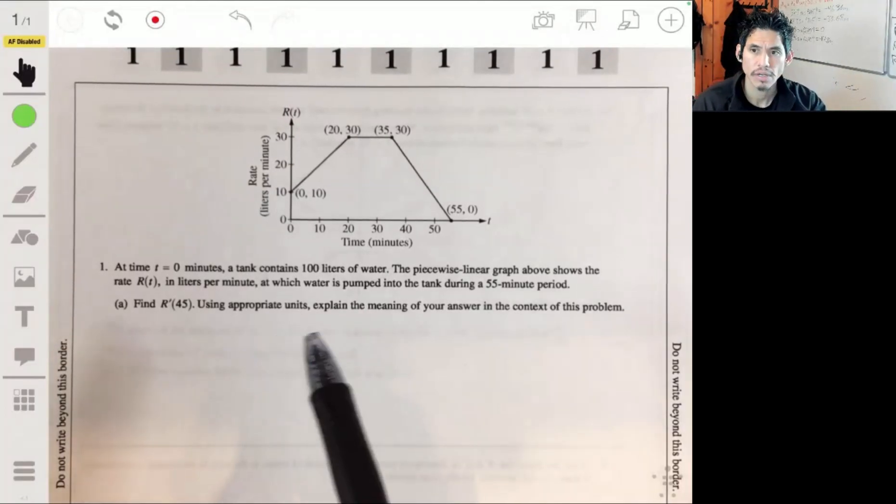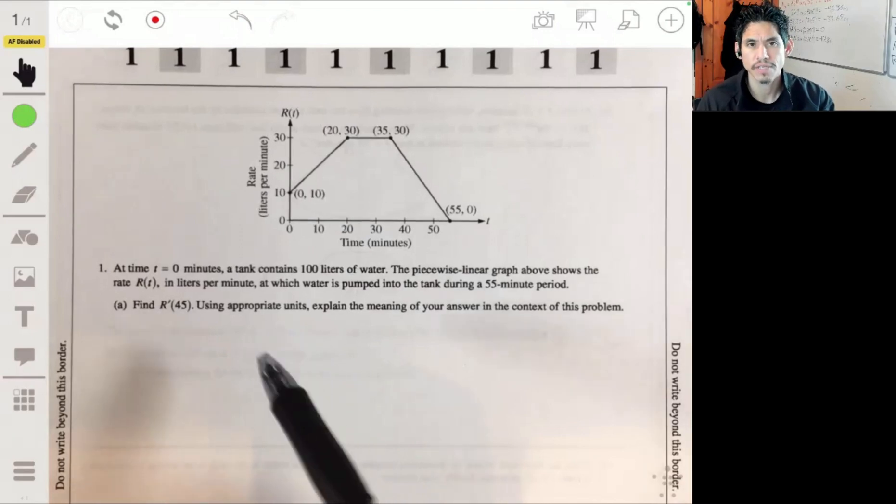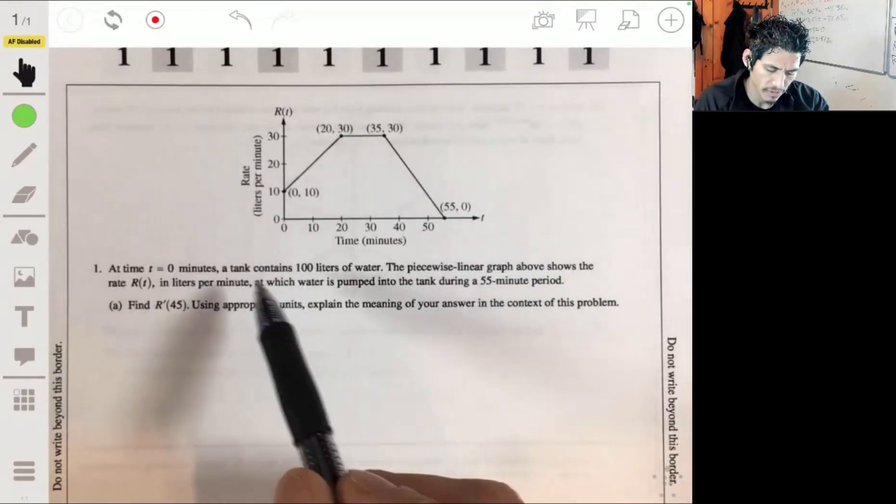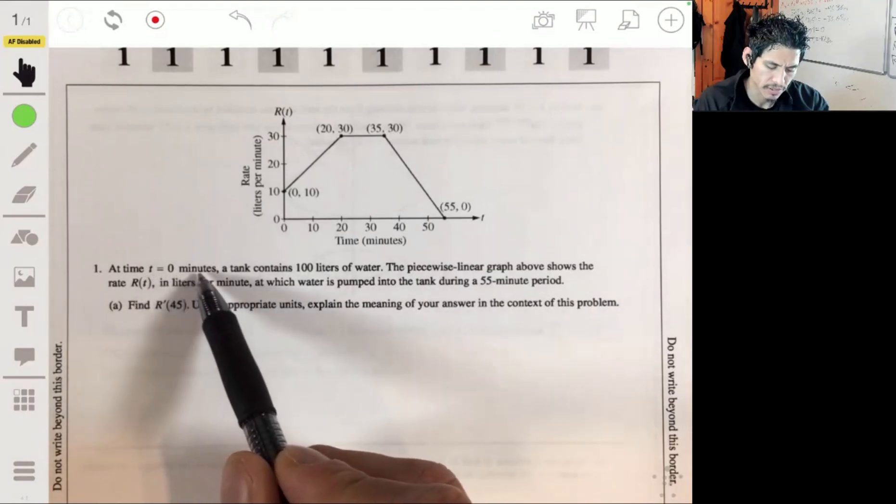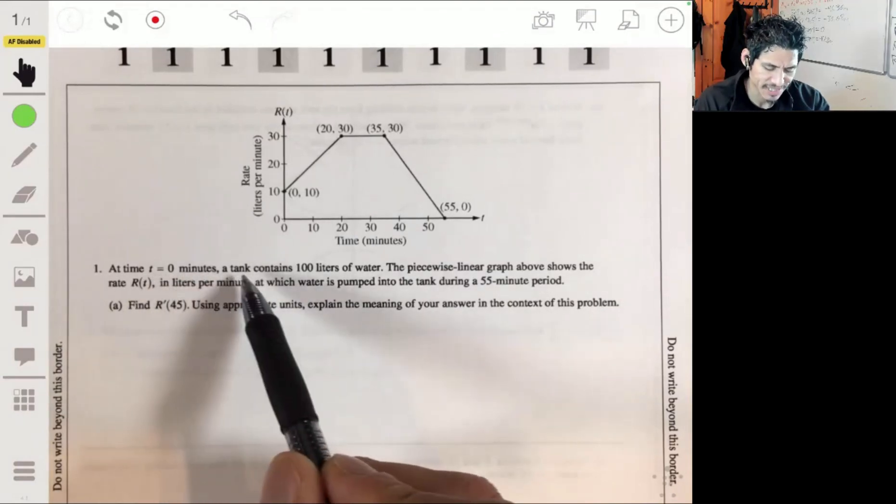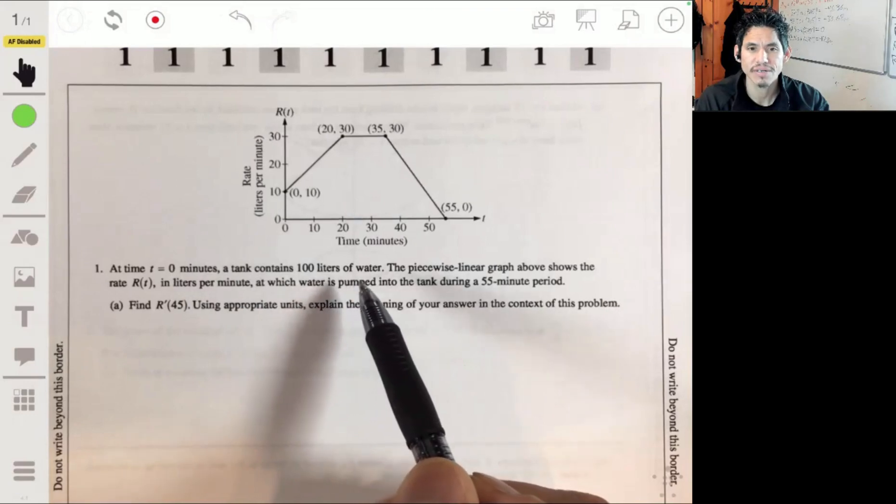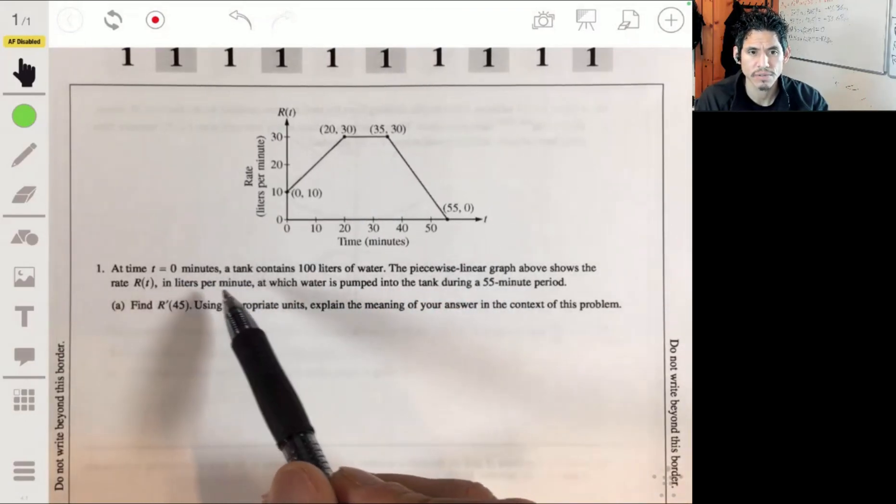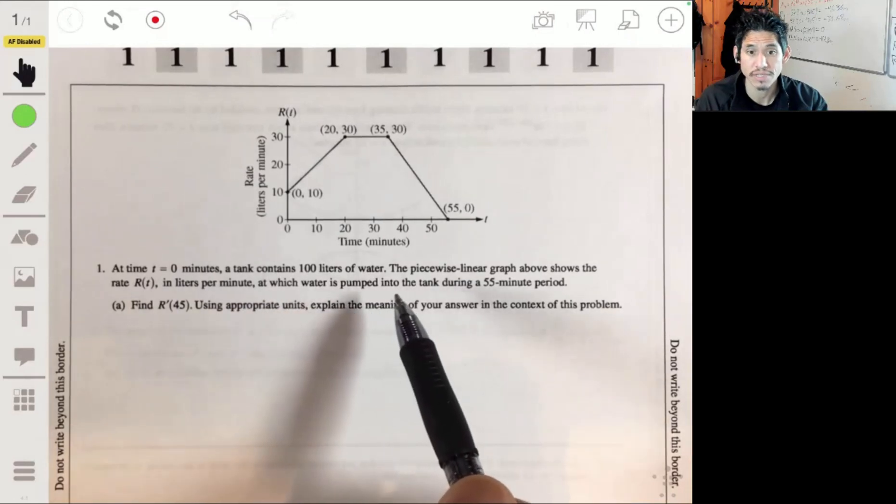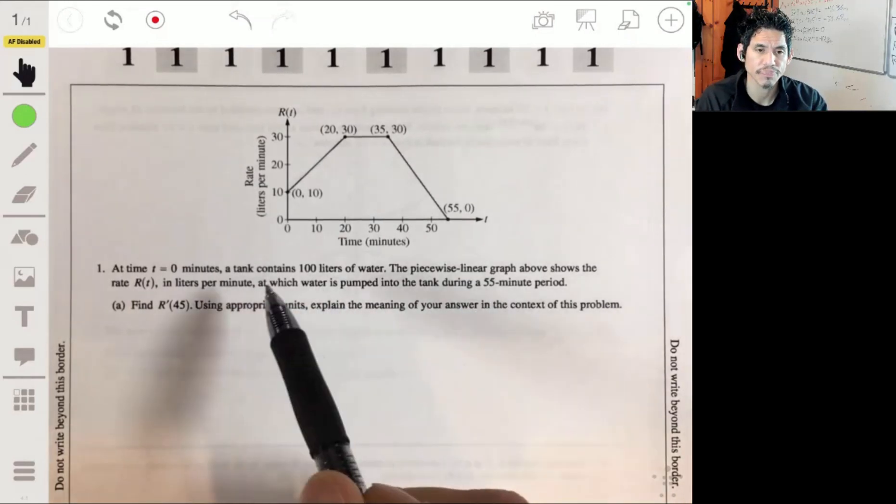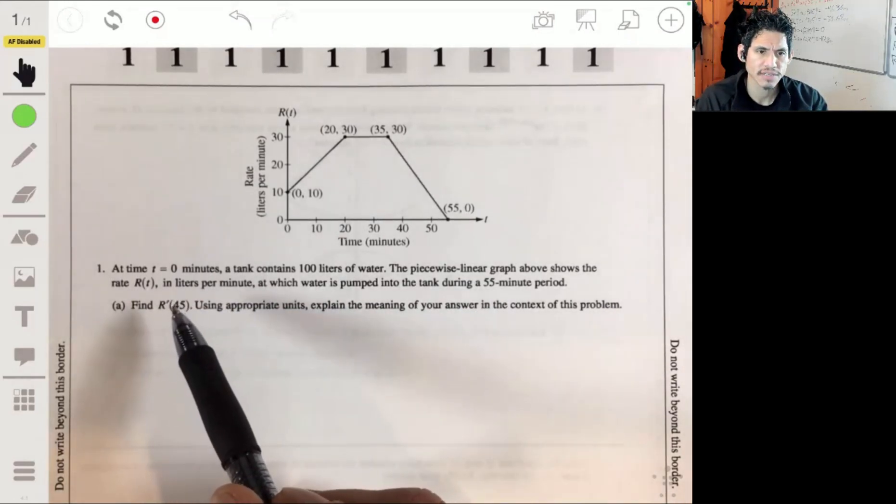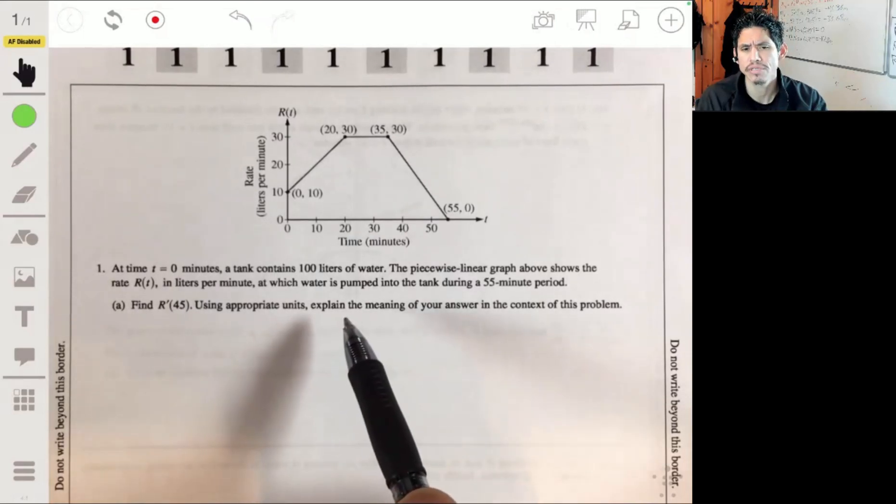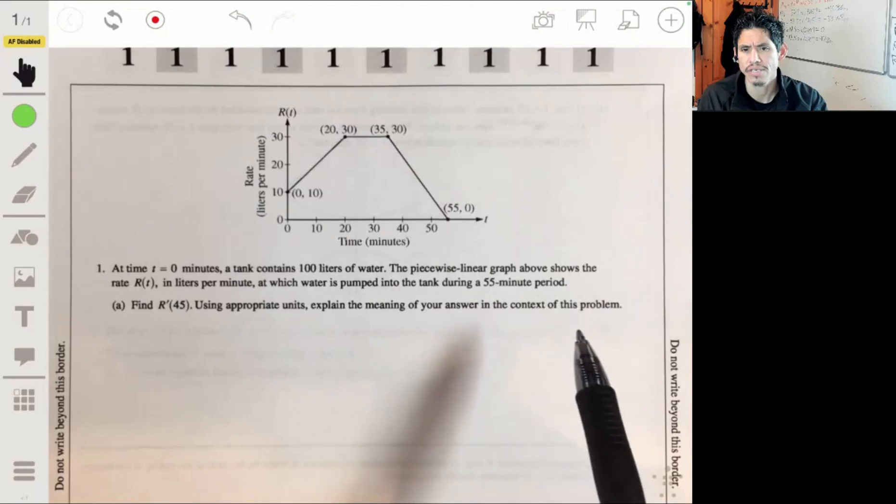Alright, so problem one of the free response section of the 2015 AP Calculus exam. We have at time t equals zero minutes a tank contains 100 liters of water. The piecewise linear graph above shows the rate r(t), in liters per minute, at which water is pumped into the tank during a 55-minute period. Part A asks: find r'(45) using appropriate units to explain the meaning of your answer in the context of this problem.